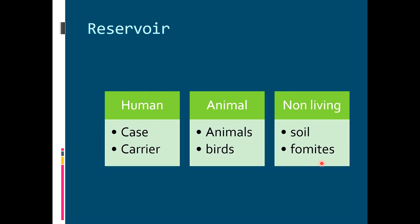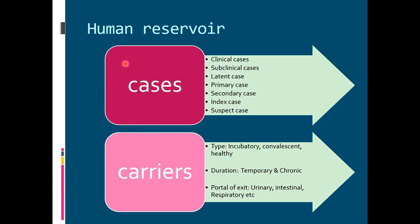Human reservoirs can be subdivided into cases and carriers. Cases are human reservoirs who exhibit signs and symptoms produced by the infectious agent. Carriers are human reservoirs who harbor the infectious agent but do not show signs and symptoms, yet are still capable of transmitting the infection to the susceptible host. The basic difference between cases and carriers is the presence of clinical signs and symptoms.